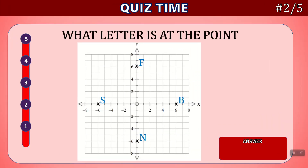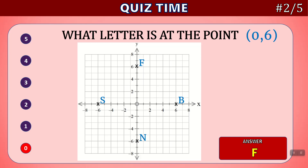Question two. What letter is at the point zero comma six? Time's up. The answer is F. Zero is the x-value, and here is the x-value of zero. The six is the y-value, and if we look on the y-axis, here is six. That is where the F is located.